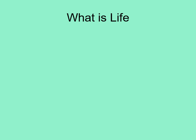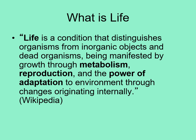Before we can talk about life elsewhere in the solar system, we should address the question of what life is. This will help us figure out what conditions to look for in other worlds. This is not an easy question to answer — while most people feel they have an idea of what life looks like, writing down a definition that includes the things we would count and leaves out the things we wouldn't can be quite tricky. One common definition relies on three key ideas: growth through metabolism, reproduction, and adaptation to the environment.